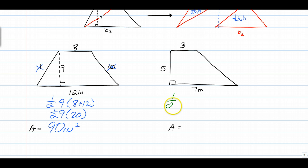So if you did one-half, your height of 5, times the sum of the bases, which would be 3 plus 7, would be 10. And then 5 times 10 is 50. Half of that, if you got 25 meters squared, you're rocking. Good to go.